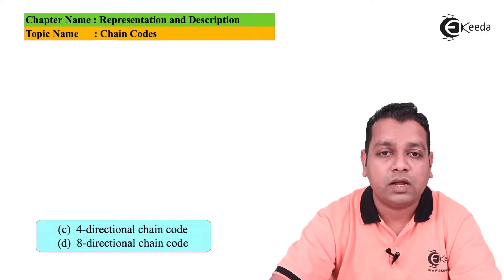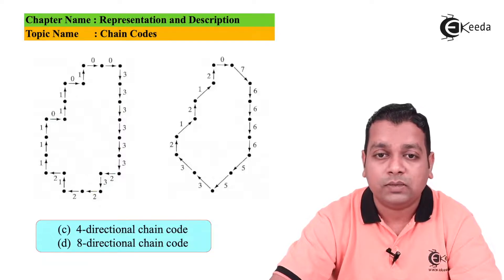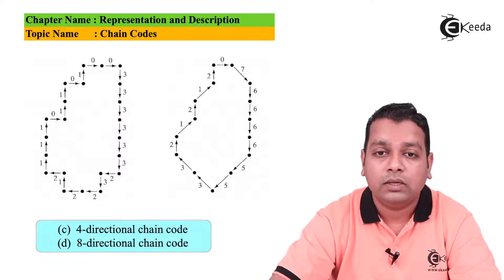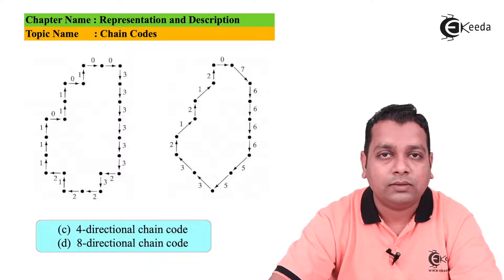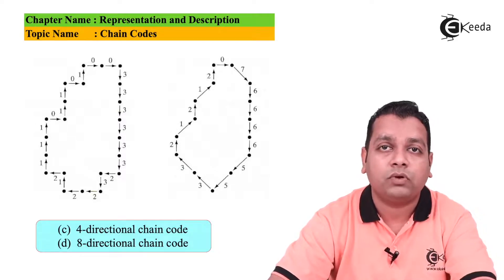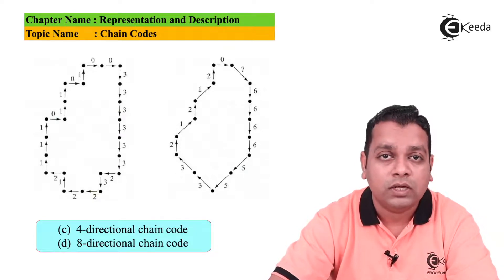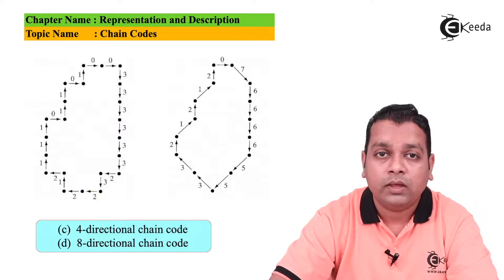So here we have the visualization of figure C and figure D. This is figure C representing the 4 directional chain code. At the left hand side and the top corner here we can start. Then as per the pattern we have seen for the 4 connectivity we are going towards the right hand side. Hence the first digit in the chain code shall be equal to 0. Then again we have the same direction to follow. So it will be again the second